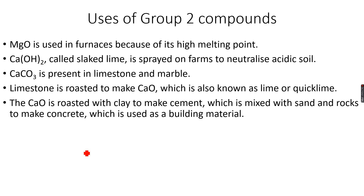Calcium carbonate is present in limestone and marble, so it can be used to build structures — the famous Taj Mahal in India is built completely with marble. Limestone is roasted to make calcium oxide, also known as lime or quicklime. This makes sense because roasting means heating it, and when we heat calcium carbonate to a very high temperature it thermally decomposes to give the oxide, as we learned in the last slide.